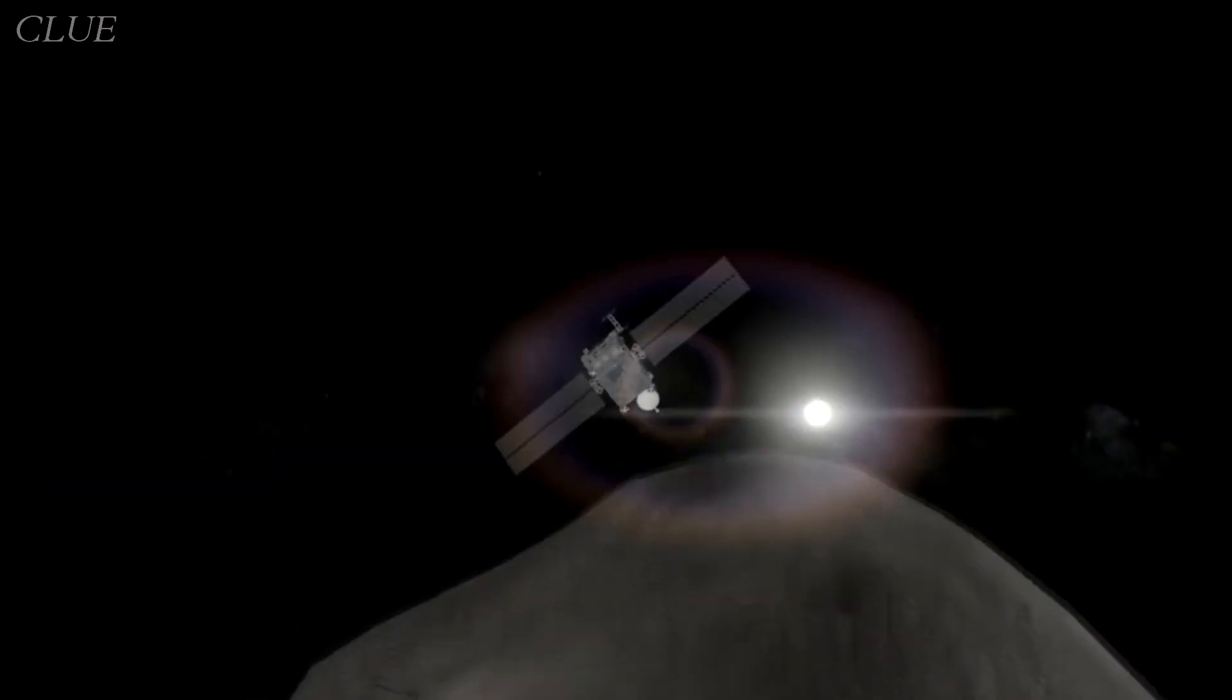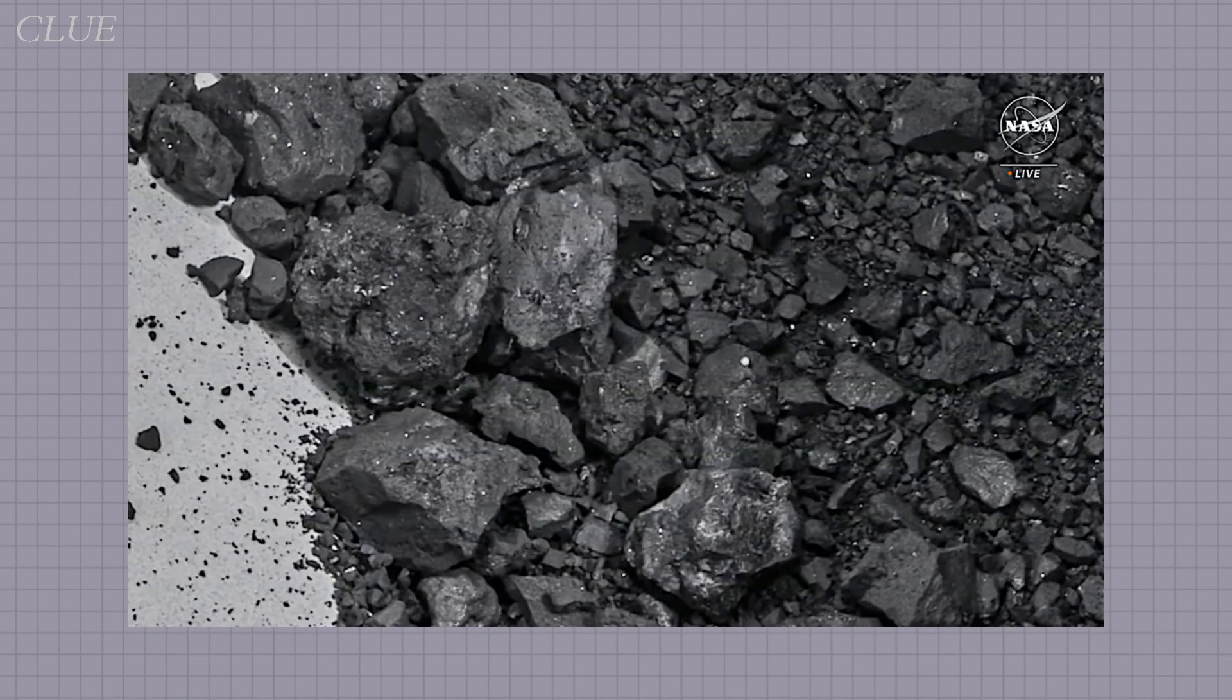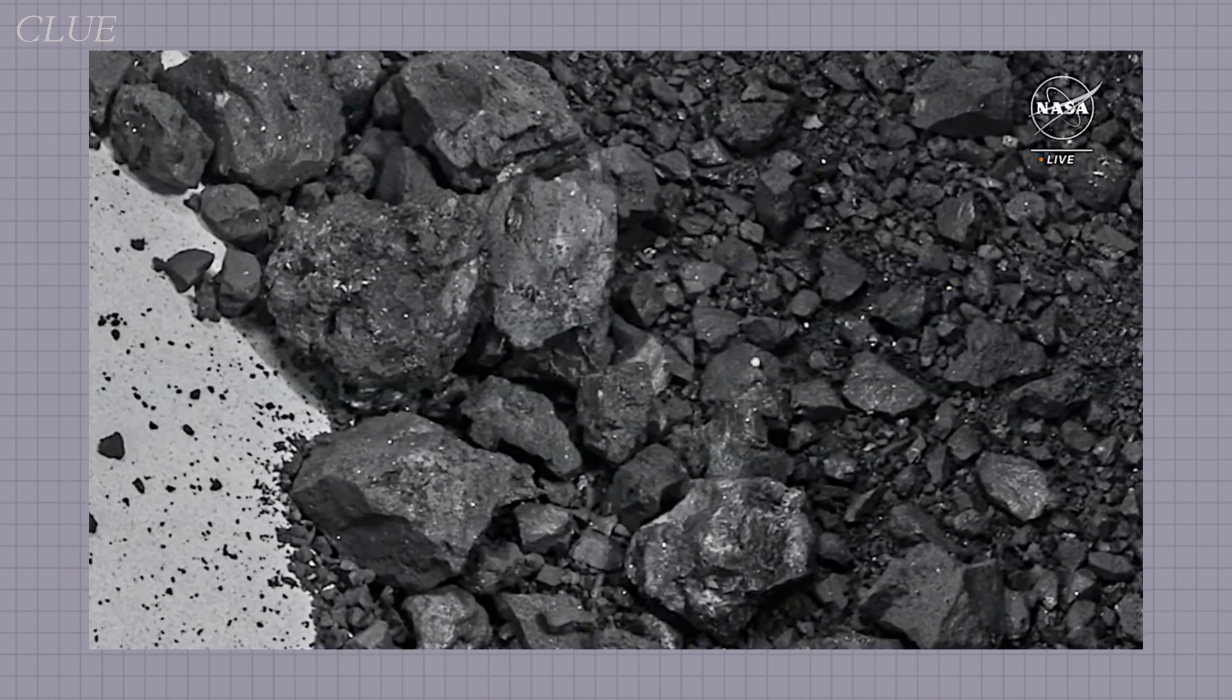We didn't just meet our goals. We soared past them in a cosmic triumph. What OSIRIS-REx brought back was no ordinary sample. It's the largest carbon-rich asteroid sample ever to be brought to our planet.